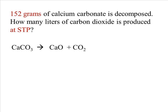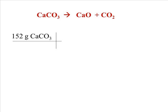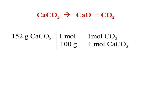We could also work this problem starting with grams. So if we had 152 grams of calcium carbonate, we decomposed it and we wanted to know how many liters of carbon dioxide we would be producing at STP, we would follow the same pattern that we have always done with stoichiometry. We would start with our 152 grams of calcium carbonate, convert that to moles using the molar mass. The molar mass of calcium carbonate is 100 grams per mole. The mole ratio between calcium carbonate and carbon dioxide is 1 to 1.